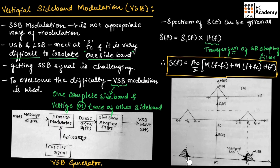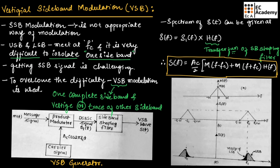From this figure, it is clear that the VSB signal transmits one complete sideband along with a part of the other sideband. This part of the other sideband is known as the vestige. In this example, the upper sideband is completely transmitted and some part of the lower sideband is transmitted. The bandwidth of the VSB signal is greater than the SSB signal but less than the DSBSC signal.